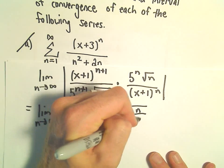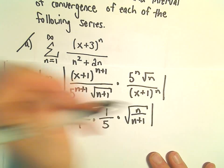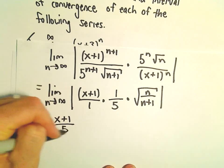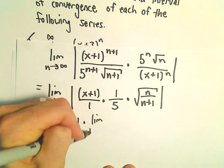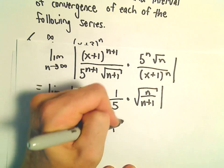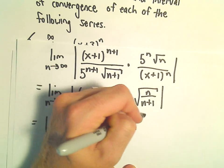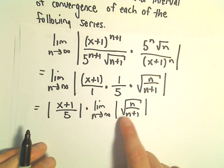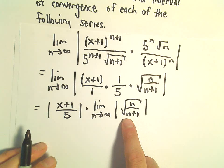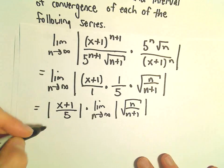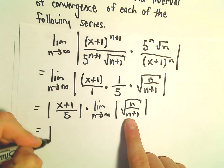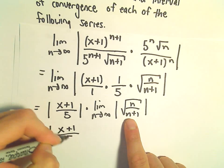We can write that as just n over n plus 1. We can pull out the absolute value of x plus 1 over 5, and then we've got the limit as n goes to infinity of the square root of n over n plus 1. If you forget about the square root for a second, as n goes to infinity we've got n over n plus 1 — both n to the first power — so the degree of the numerator equals the degree of the denominator. The limit is going to be the square root of the ratio of the coefficients, which gives us the square root of 1. So this whole limit works out to be 1.